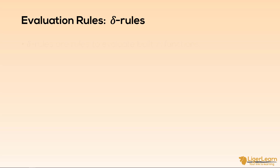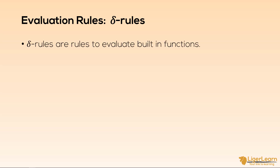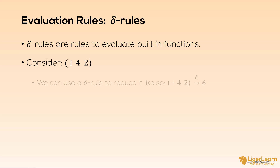Delta rules are rules which are used to evaluate built-in functions. They are quite easy to understand. Consider the lambda expression for 4 plus 2. We all know that the answer should be 6, and that this expression should reduce to the value 6. So we reduce it by using a delta rule. Whenever we reach a point in an expression where we are using a primitive function that we know how to reduce, we say we are using a delta rule to reduce it. This is usually denoted with a right arrow showing the direction of the reduction with a delta symbol on top of the arrow.